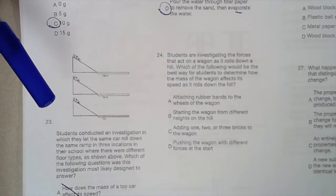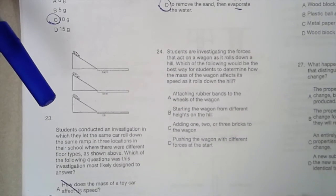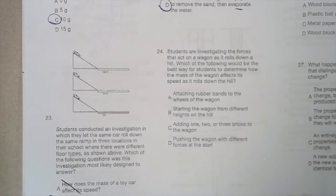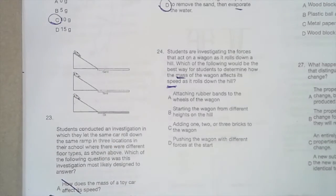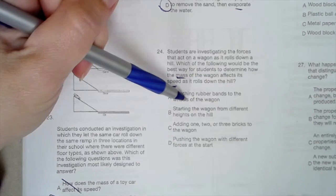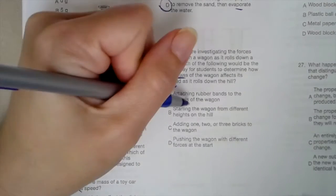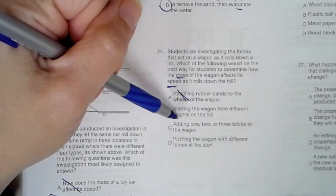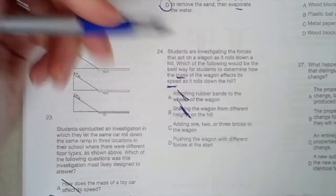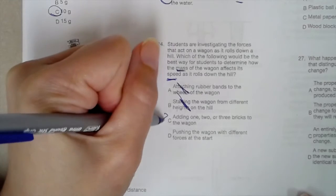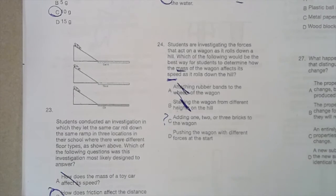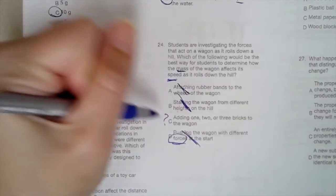Students are investigating the forces that act on a wagon as it rolls down a hill. Which of the following would be the best way for students to determine how the mass of the wagon affects its speed as it rolls down the hill? So we want to know how the mass affects the speed. Attaching rubber bands to the wheels of the wagon. Does that change the mass? No. Starting the wagon from different heights on the hill. Does that change the mass? No. Adding one, two, or three bricks to the wagon. Does that change the mass? Yes. Let's see what D says. Pushing the wagon with different forces at the start. That doesn't change the mass. That changes the force. So that is not correct. Letter C was our correct answer.